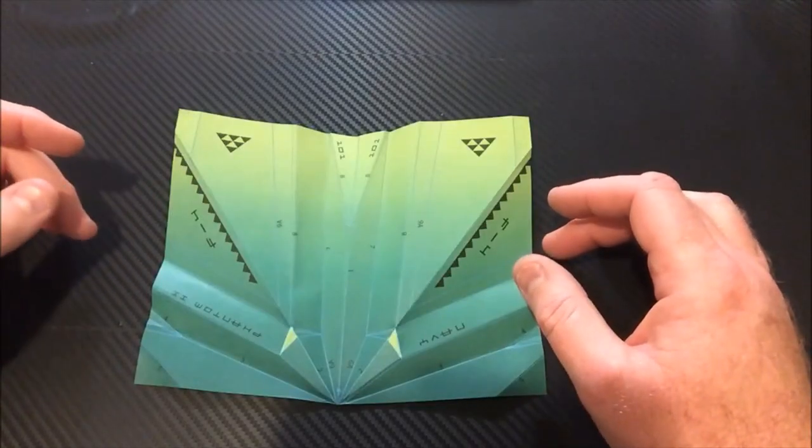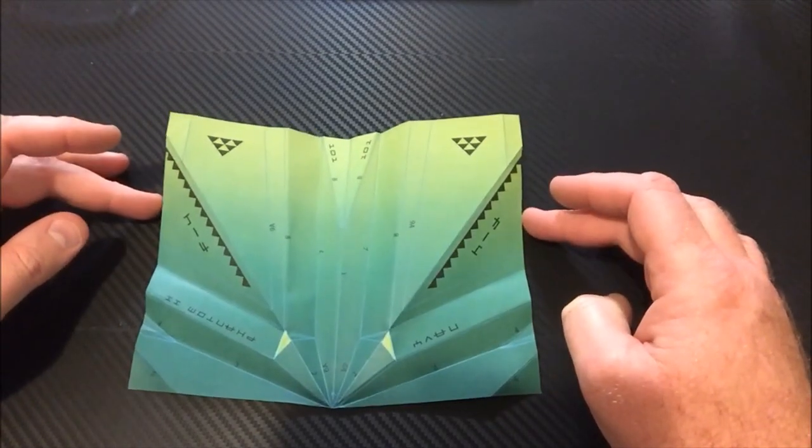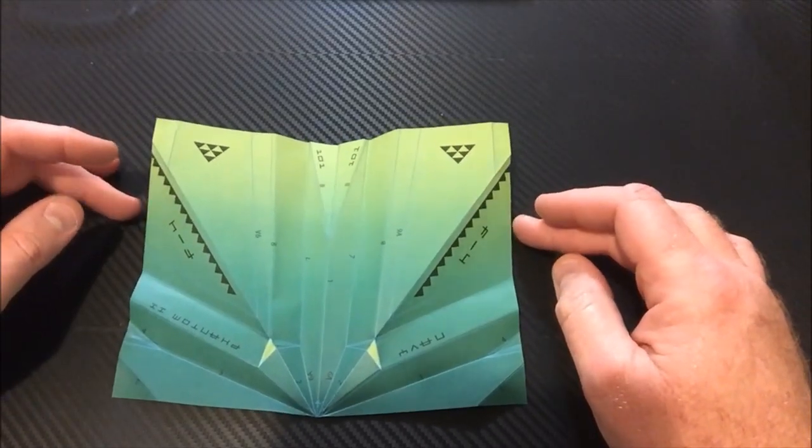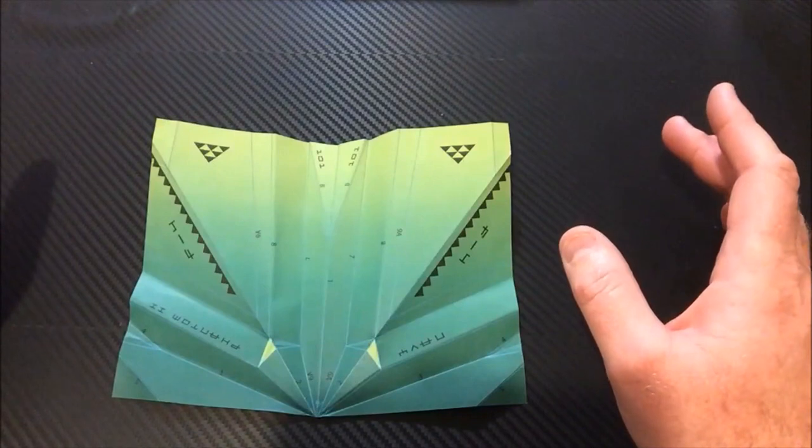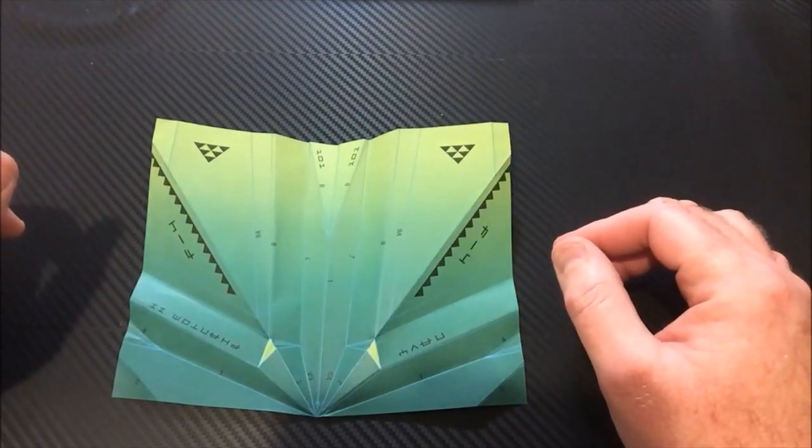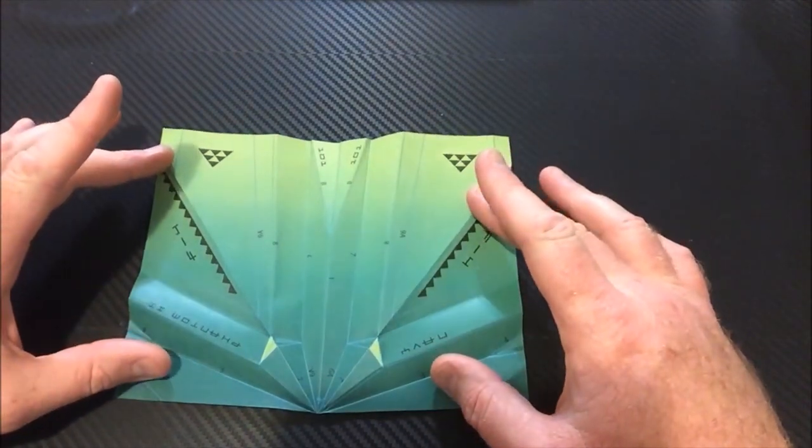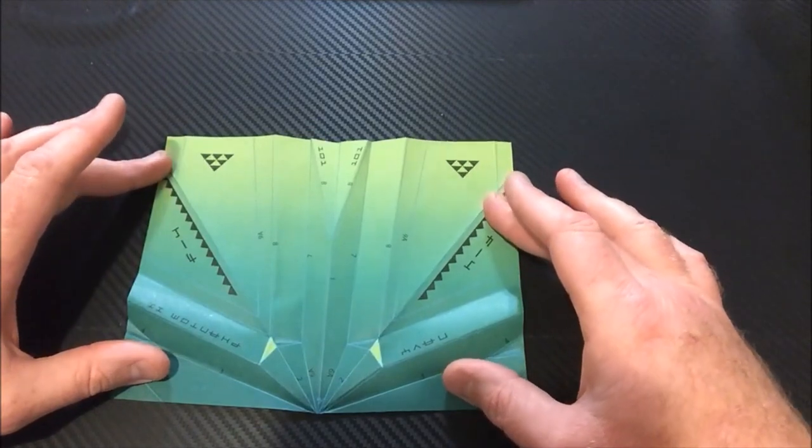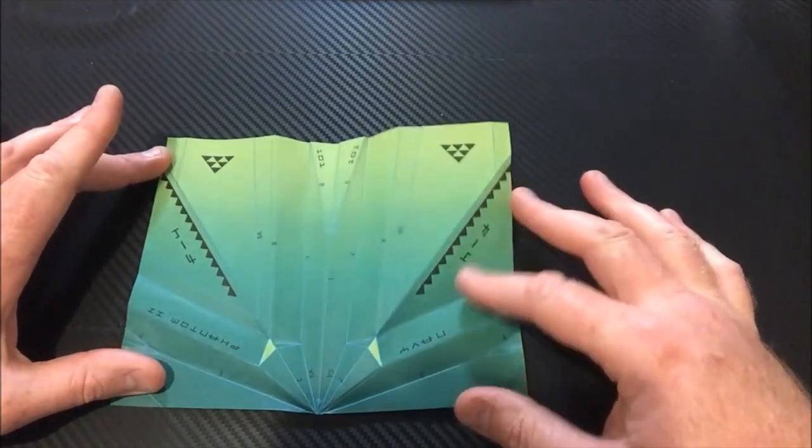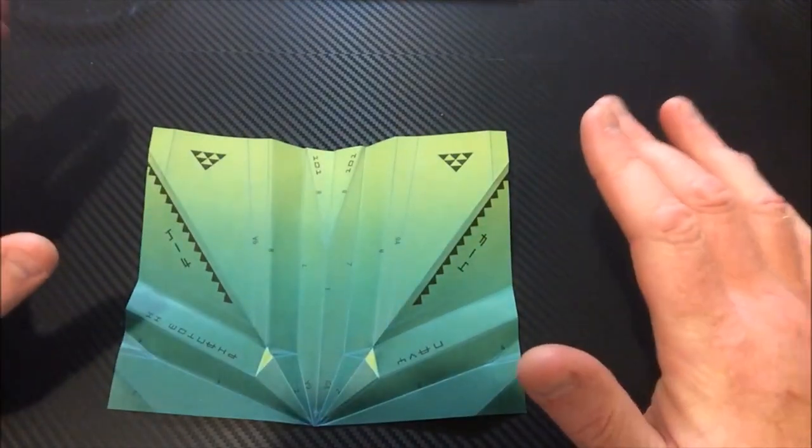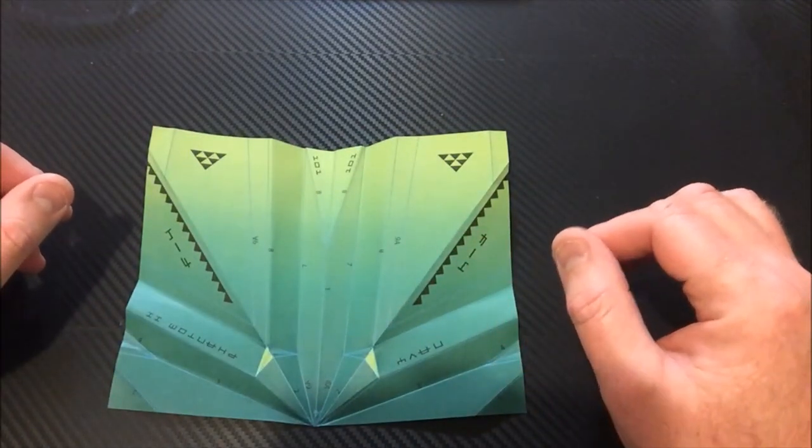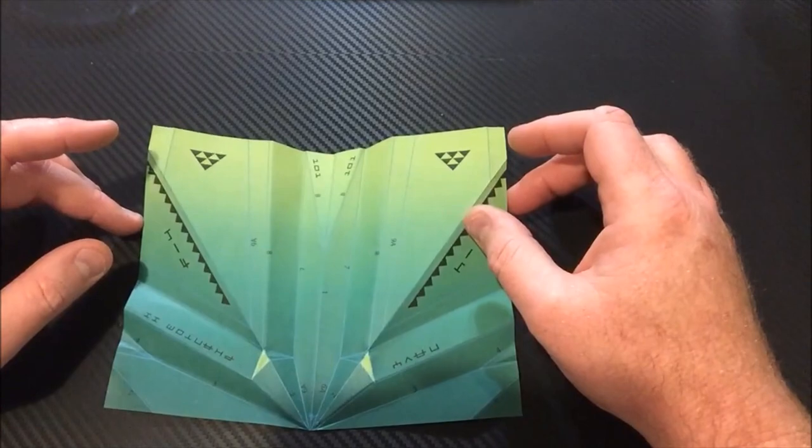What's going on everybody? This is the F4 Phantom 2. This is a very challenging airplane to make, and without a piece of paper like this one that has all the lines already on it, it is extremely challenging, but I will show it to you nonetheless.